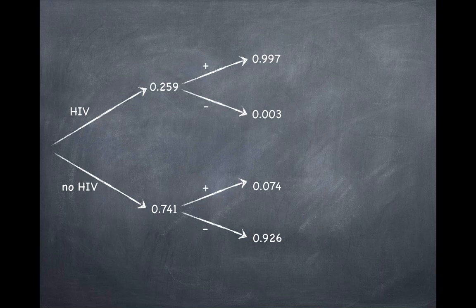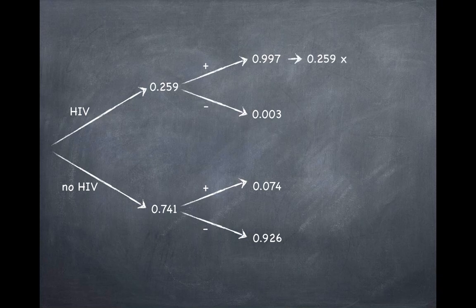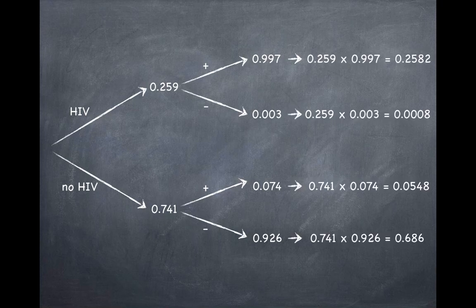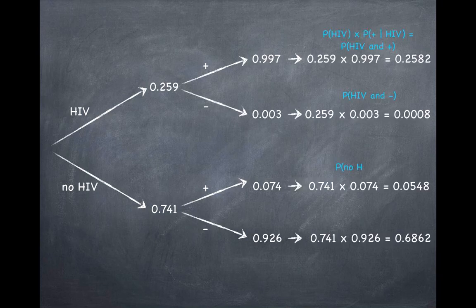Now, why did we want to actually organize this information in tree form? Let's say I'm interested in finding the probability of a person being an HIV carrier and testing positive. All I have to do is follow the probabilities I encounter on the first branch and multiply them out. I can do this for each one of the branches. The probability of HIV times the probability of positive given HIV gives us the joint probability. This is true for each one of these branches.